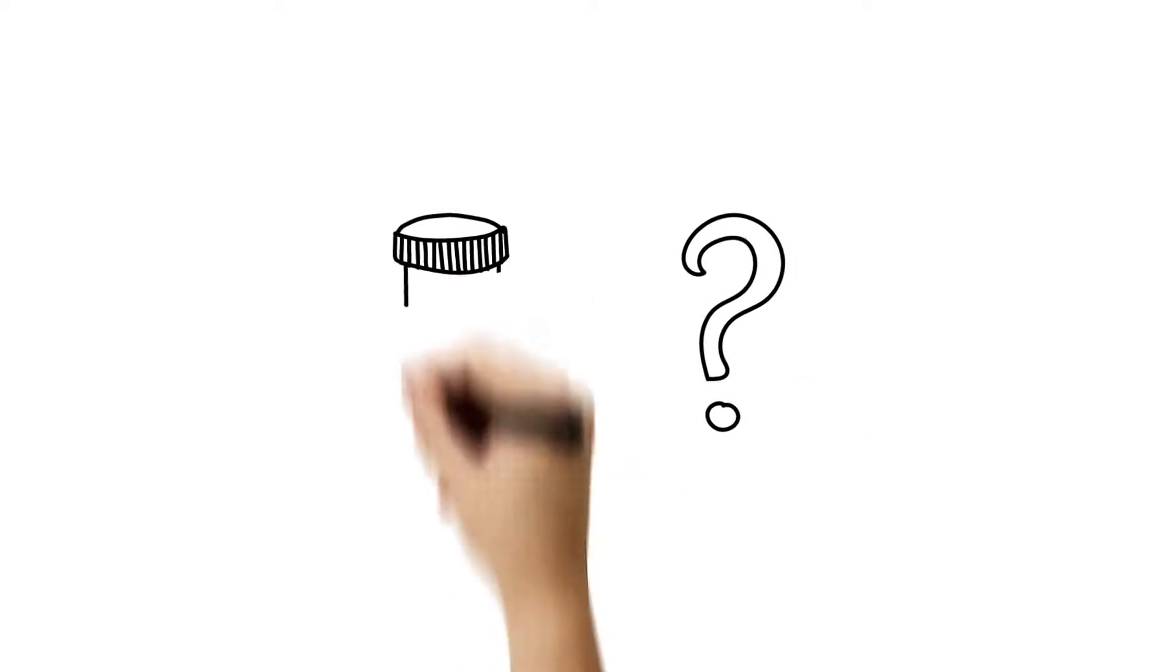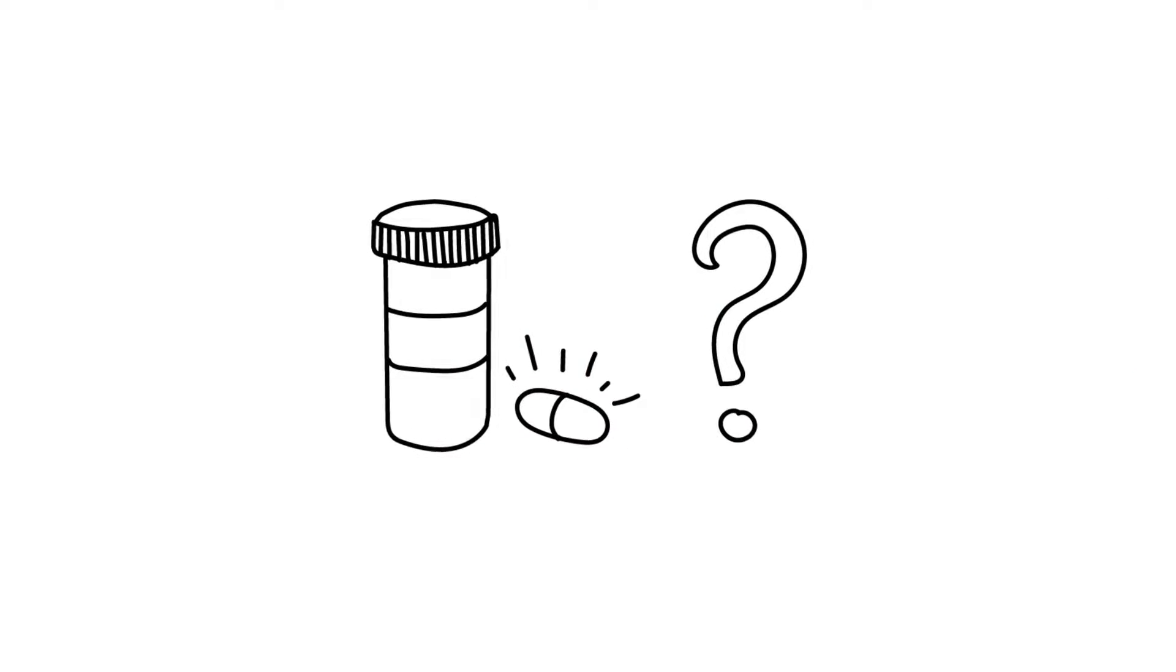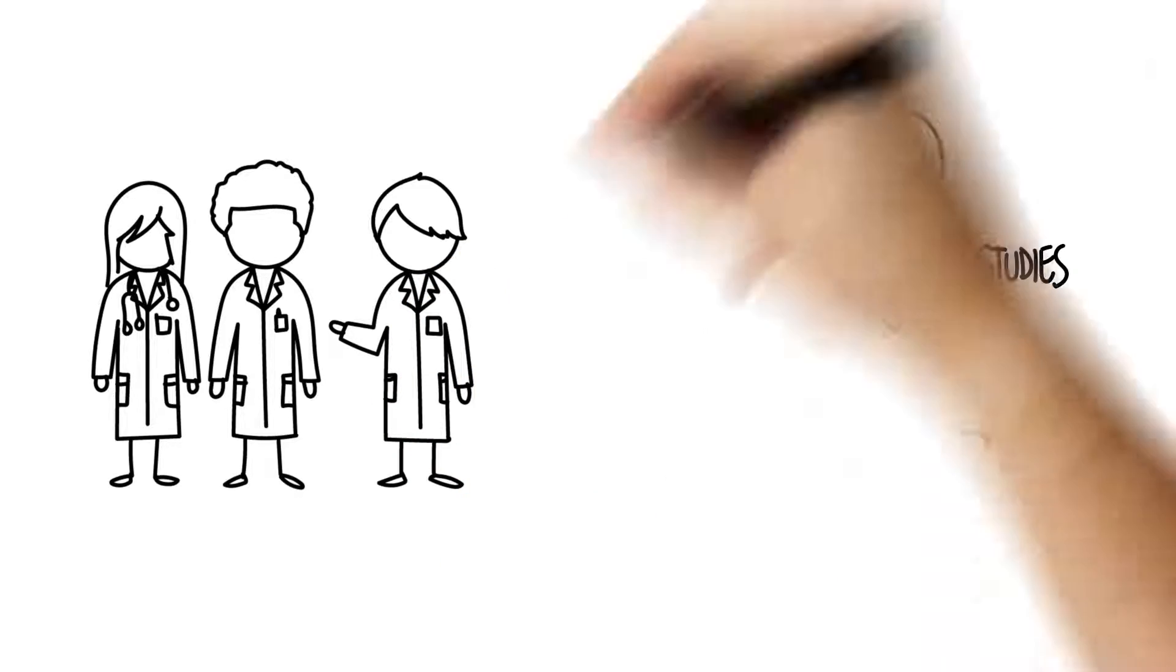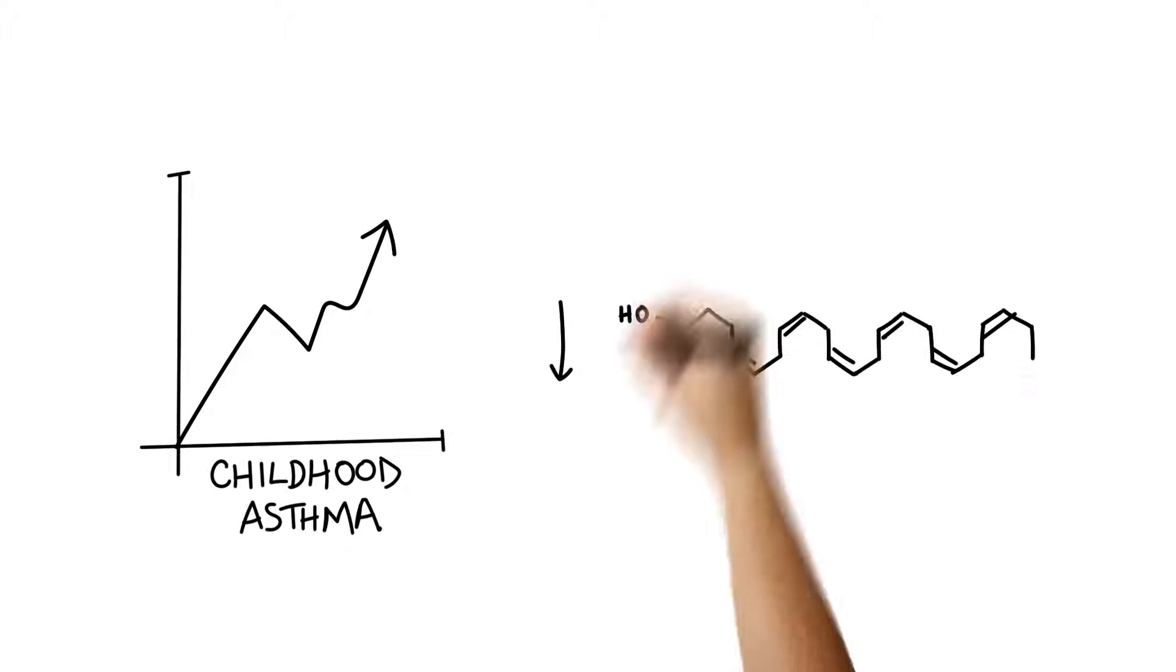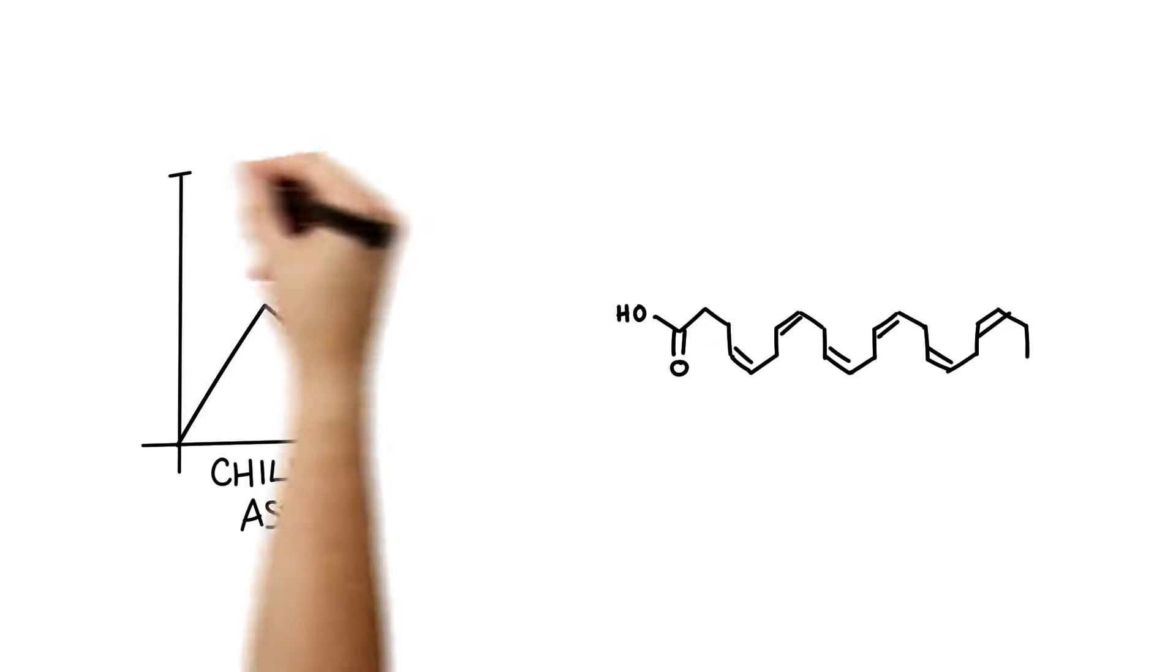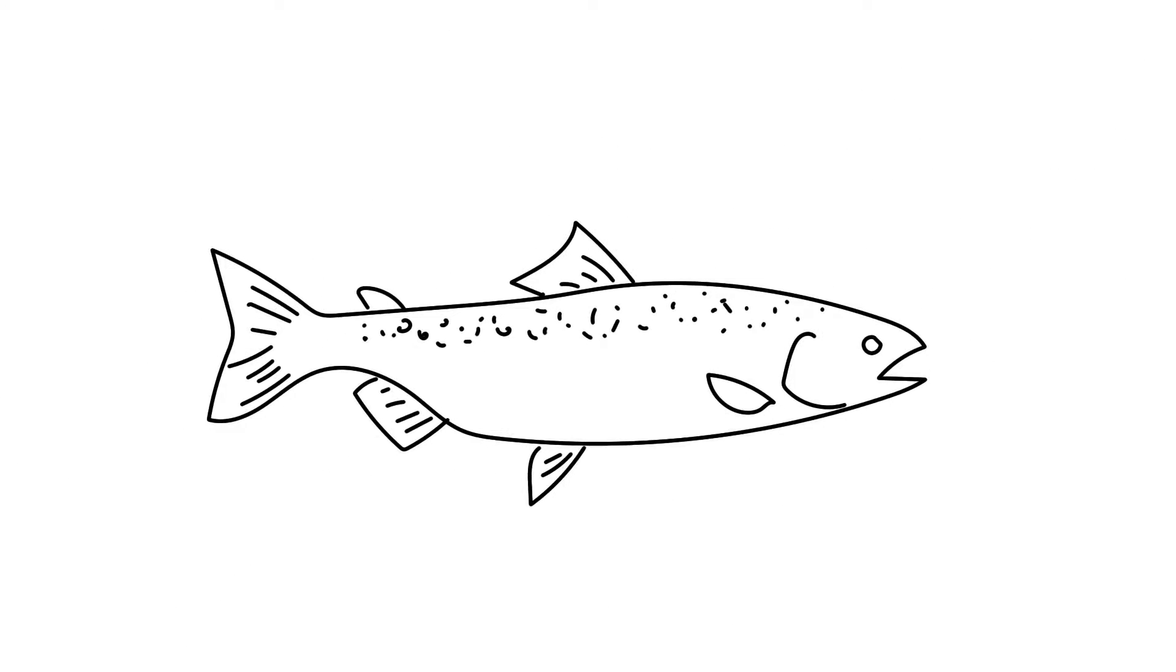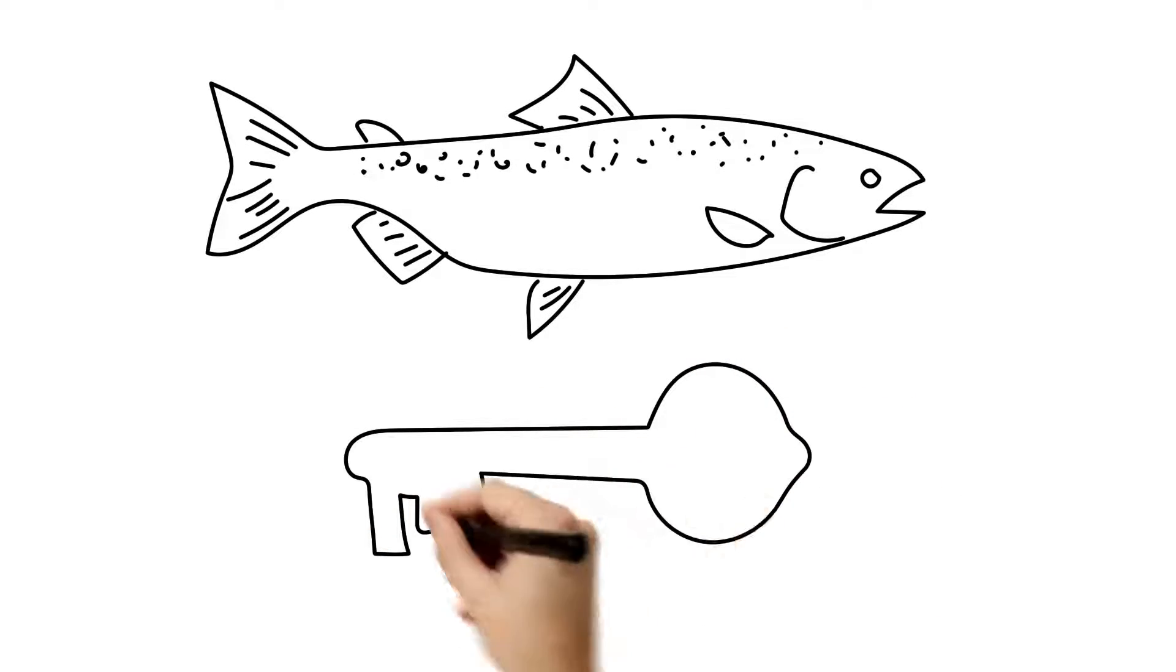But what if a simple supplement could prevent asthma in the first place? Researchers at Copsack and the University of Waterloo had a hunch that the rising rates of childhood asthma might be linked to our decreasing intake of long-chain omega-3 fatty acids. This specific type of omega-3 is found in cold-water fish and is the key to regulating our immune responses.